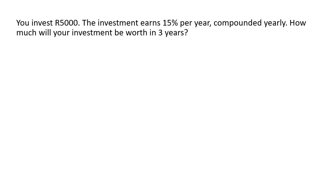You invest 5,000 rand. The investment earns 15% per year, compounded. How much will your investment be worth in three years? So, year number one, year number two, and year number three.